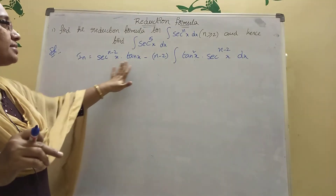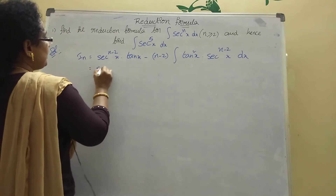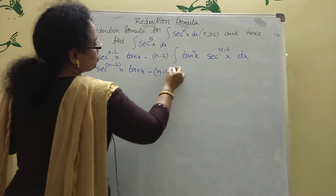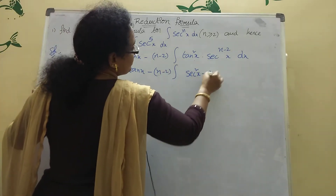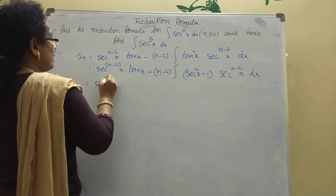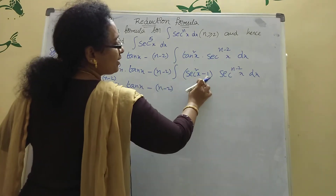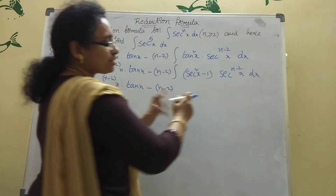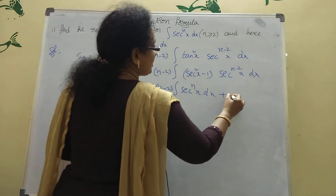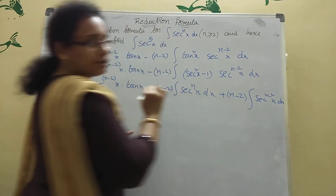We have secant power (n minus 2) x · tan x, and then the remaining integration. Now convert tan squared x using the identity: tan squared x equals secant squared x minus 1. So the integral becomes the integral of tan squared x into secant power (n minus 2) x dx, which gives integration of secant power n x dx minus integration of secant power (n minus 2) x dx.